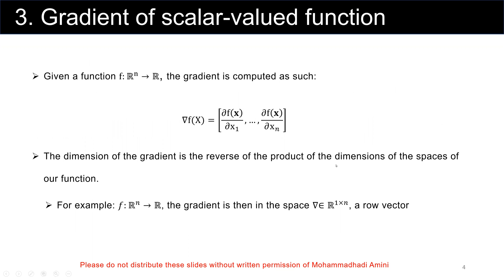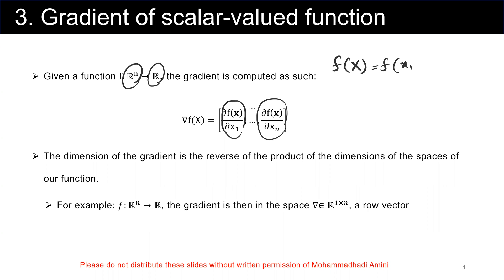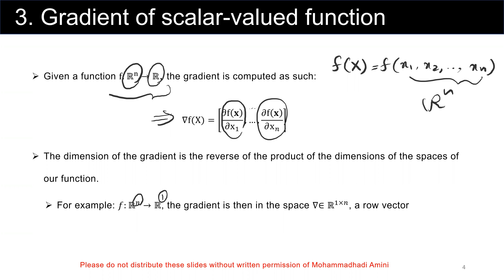Let's see a more formal definition. Given a function f, which is a scalar valued function, the input is a vector of n dimensions and the output is a scalar. The gradient of function f is calculated as: partial derivative of f with respect to x1, x2, and xn. The gradient is a vector, and its dimension is the reverse of the product of dimensions of the function's spaces. The spaces are n and one, so reversed it is one by n — a row vector.